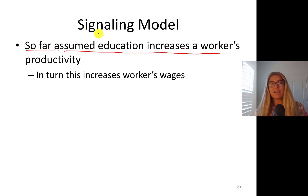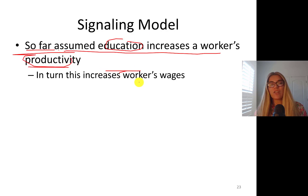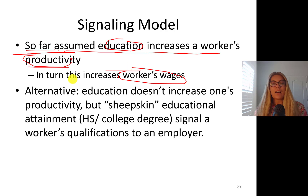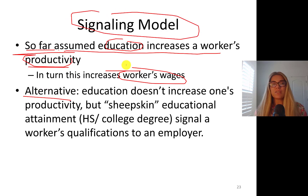As a result, your productivity goes up, and in turn it increases your wages. The alternative theory is the signaling model of education, which says that education doesn't increase one's productivity, but it's the sheepskin effect.